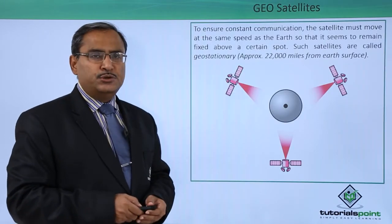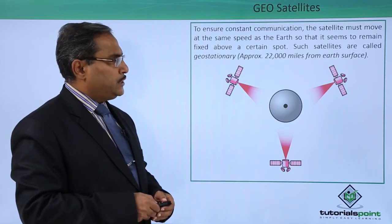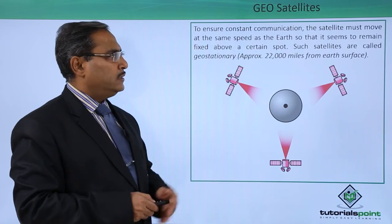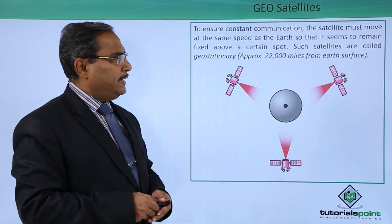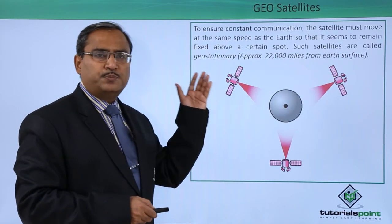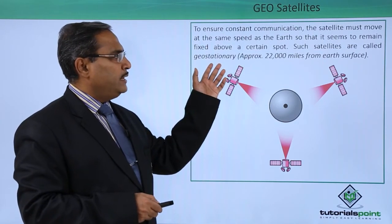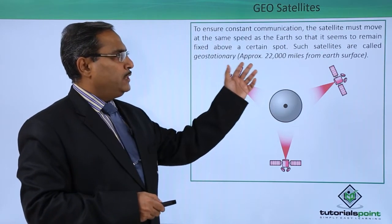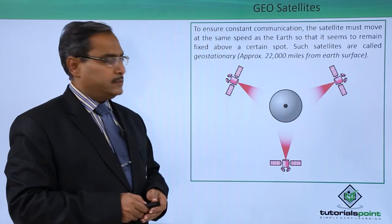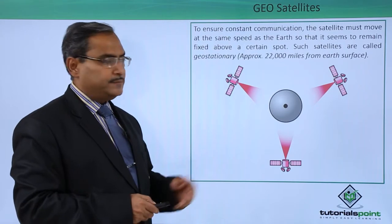To ensure constant communication, the satellite must move at the same speed as the earth, so that it seems to remain fixed above a certain spot. Such satellites are called geostationary satellites, approximately 22,000 miles from the earth surface.